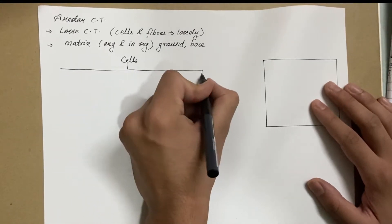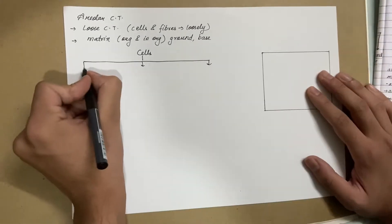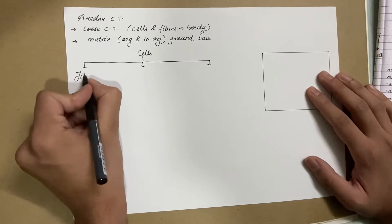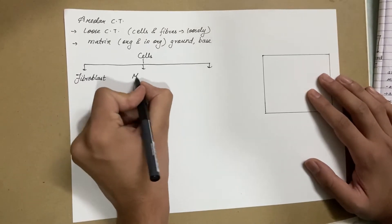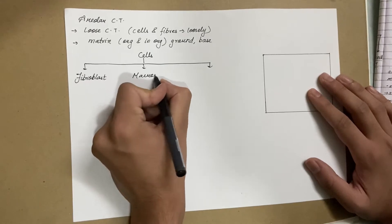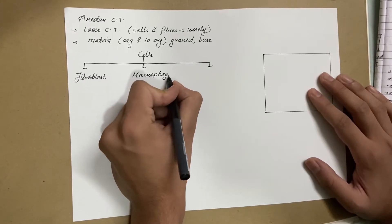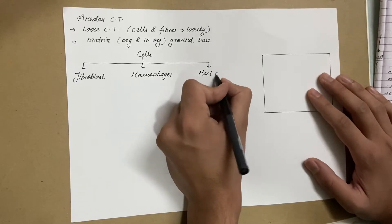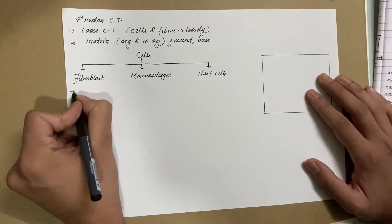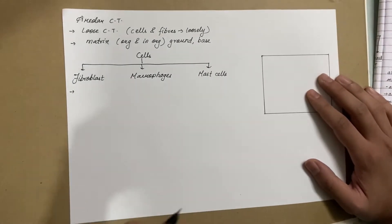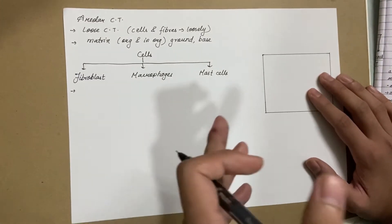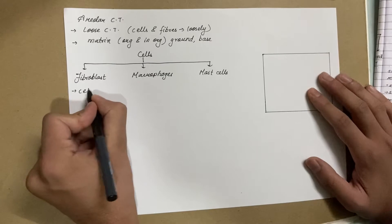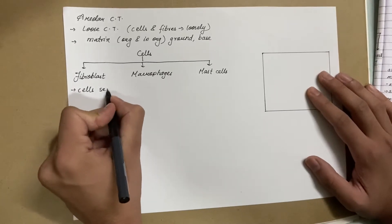They are the fibroblasts, macrophages, and finally the mast cells. Fibroblasts, as the name suggests, contains fibro plus blast - fibro meaning fiber and blast meaning precursor cell. So they are cells that secrete fibers.